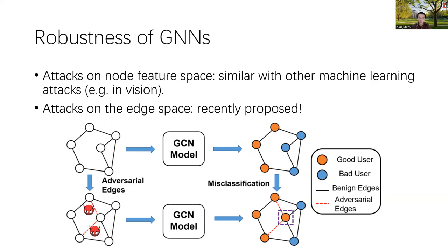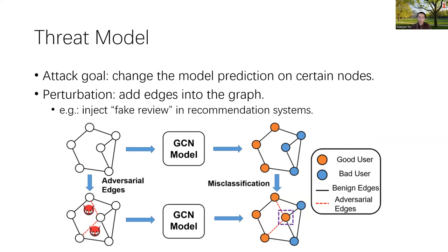Recently, another type of attack has been proposed where the attack is launched on the edge space. A malicious attacker will add malicious edges into the graph so that the model prediction will be fooled. We mainly focus on this new attack because the perturbation space is discrete. We focus specifically on adding edges rather than removing them, as this is a more practical approach — for example, it is easier to add fake reviews rather than removing existing ones in recommendation systems.